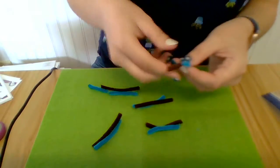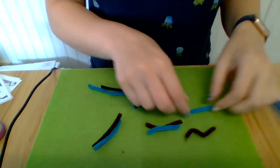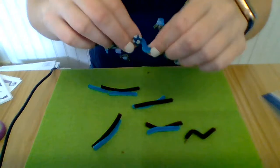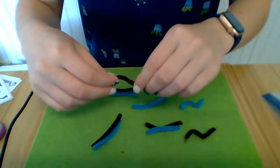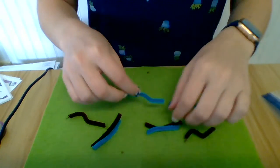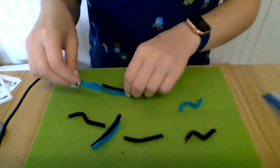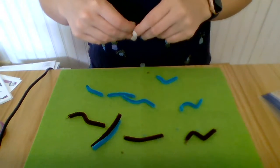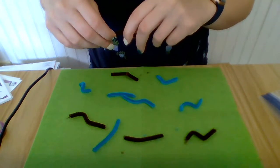Now you can take your pipe cleaners and bend them into different shapes if you would like, or you can make a different type of bug or insect. But I'm just going to make some wavy worms. Then we're going to place them on our felt sheet. Our felt sheet is supposed to be our grass.